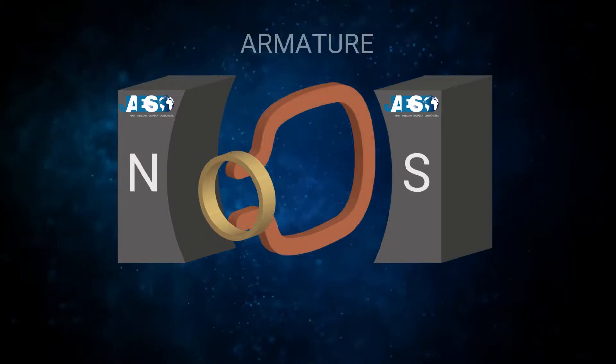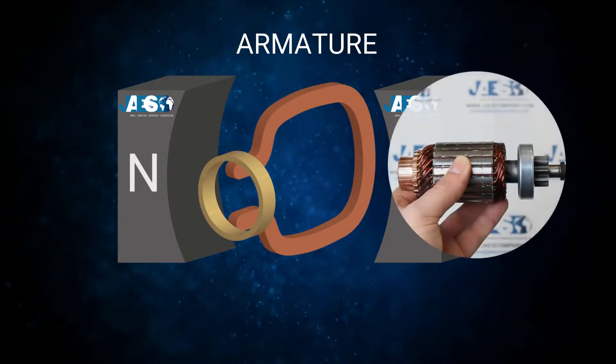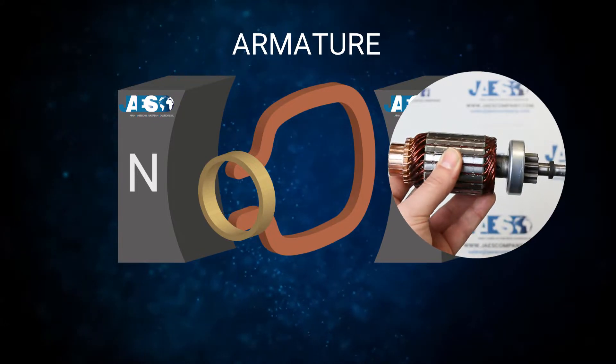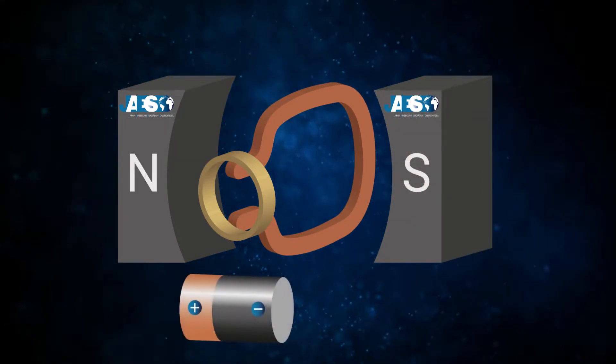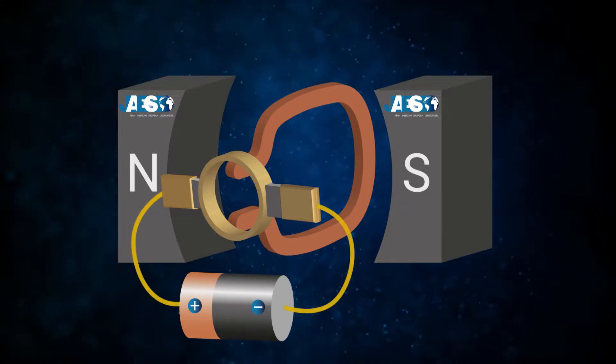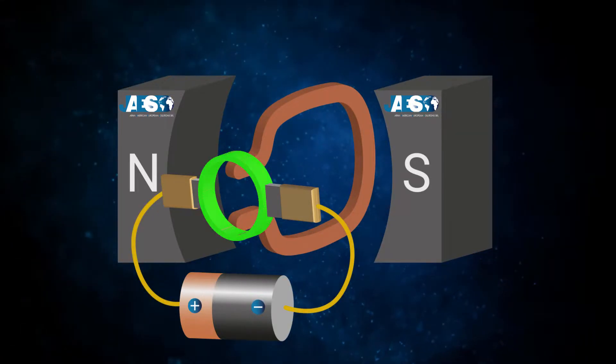This is the armature, which is a simple copper coil and represents the rotating part of this motor. The armature receives the electric current thanks to its connection with the collector.